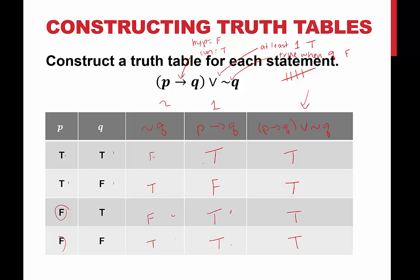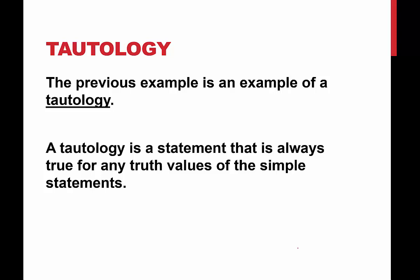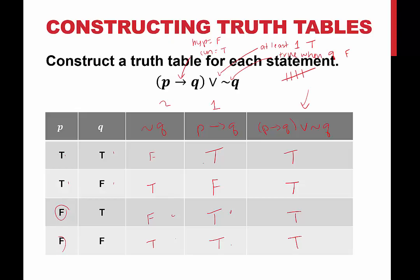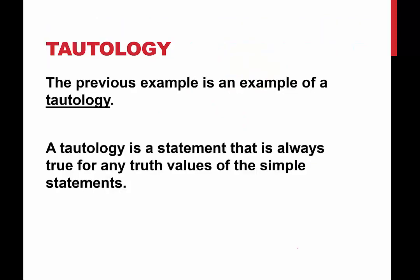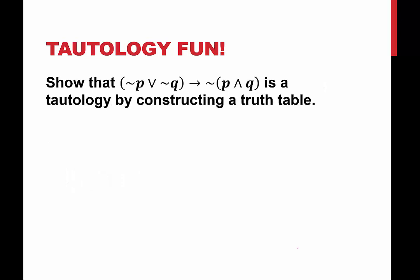There's actually a special name for that — it's called a tautology. A tautology is a statement that is always true for any truth values of the simple statements. It didn't matter whether p was true or false, and it didn't matter whether q was true or false — we always ended up with a true final statement. That's called a tautology when that final column is all trues. Now we're going to show that this particular statement is a tautology by constructing a truth table. The last column should be all trues, but you have to fill in the rest — so go ahead, pause the video, create the truth table, and make sure you end up with all trues.